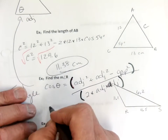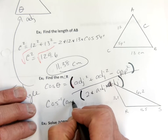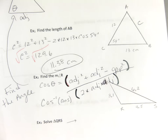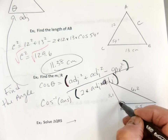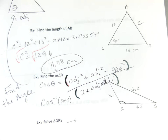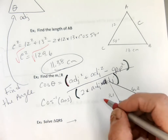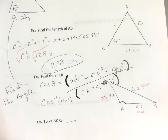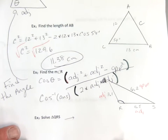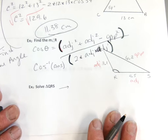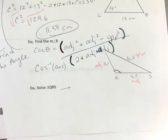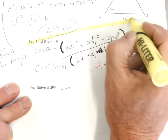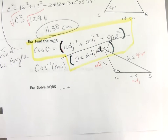All right, let's see if you guys can figure this one out. We want to find angle R. That would make my 3.1 my adjacent and the 4.5 the other adjacent — so here's my adjacent, my other adjacent, and my opposite. See if you can set that up, and then I'll do it with you. Don't forget the parentheses.